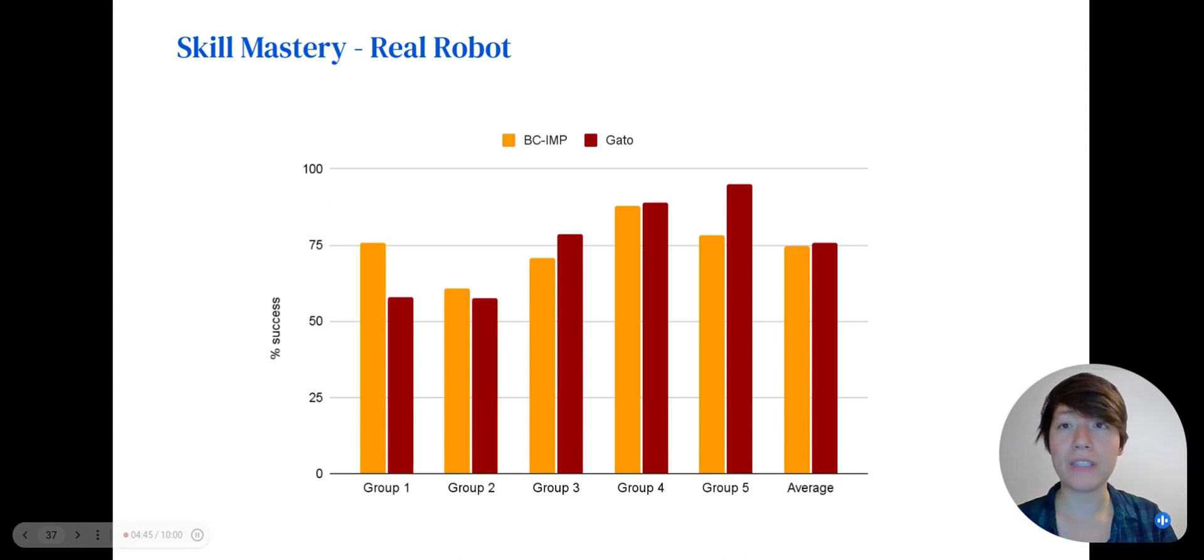After optimizing for speed, we evaluated Gato on the skill mastery benchmark on the real robot. We matched the performance of the BC-IMP baseline from the original RGB stacking paper. For some object groups, like the most difficult group 1, we underperformed the baseline, while for groups 3, 4, and 5, we exceed the baseline.